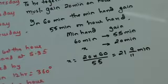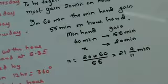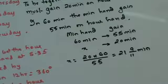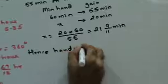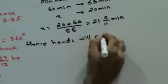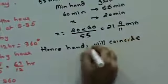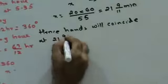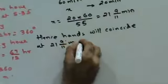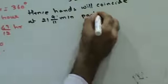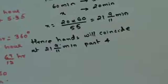If the minute hand covers 21 9/11 minutes, it will have gained 20 minutes on the hour hand. So from 4 o'clock, after 21 9/11 minutes, the two hands will be together. Hence, the hands will coincide at 21 9/11 minutes past 4.